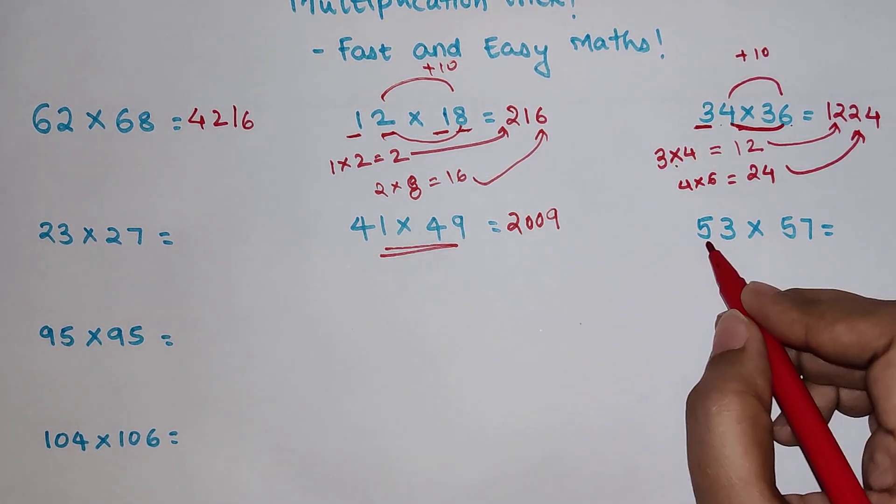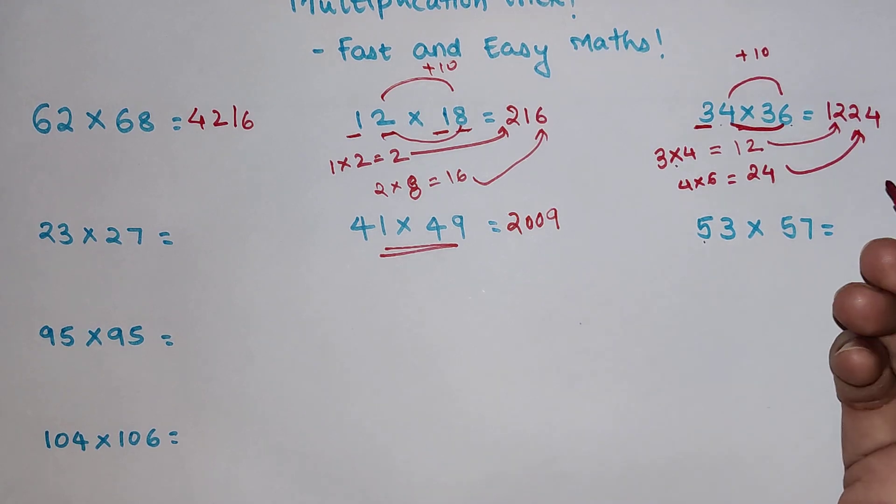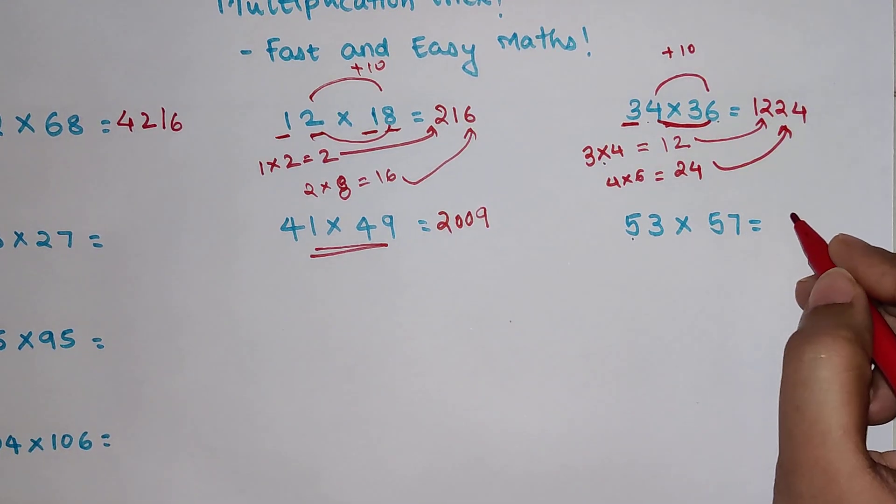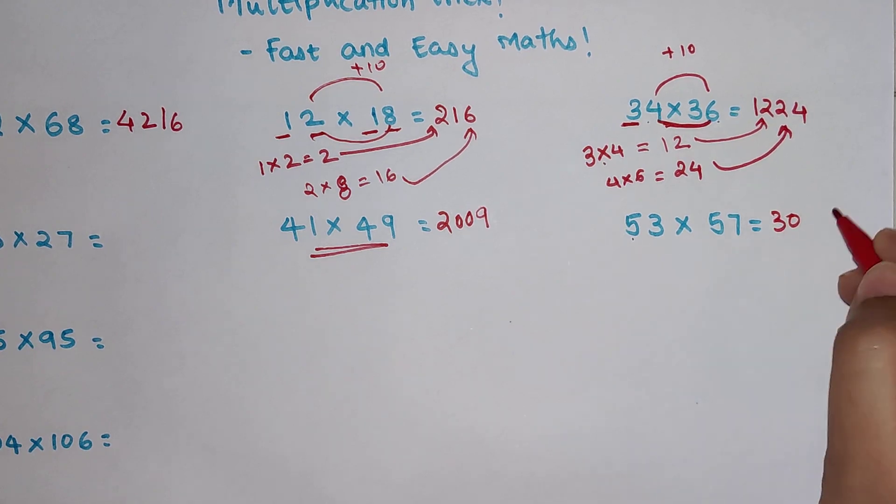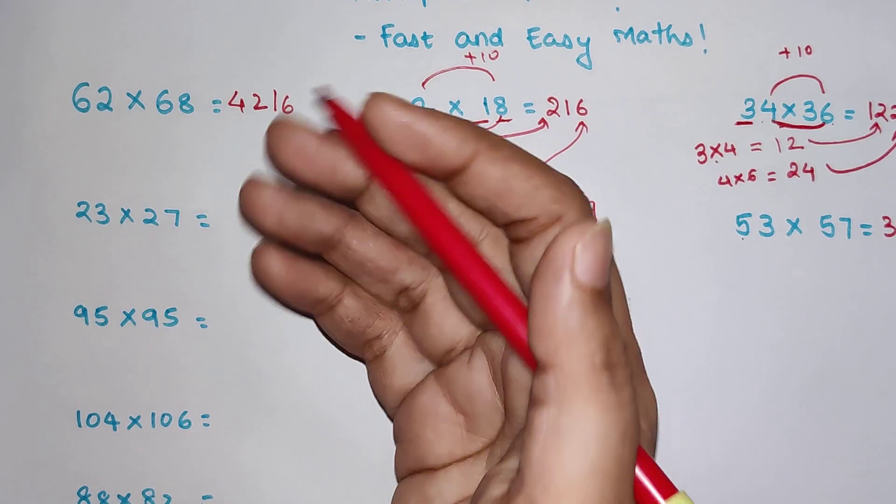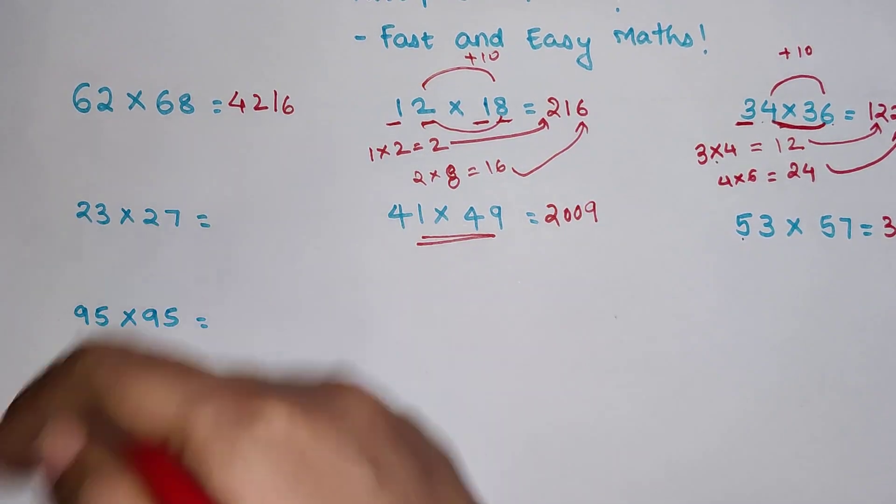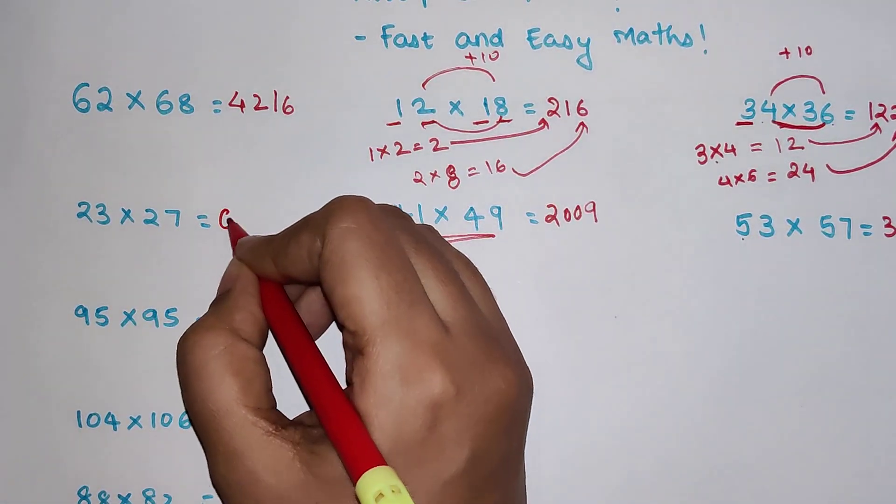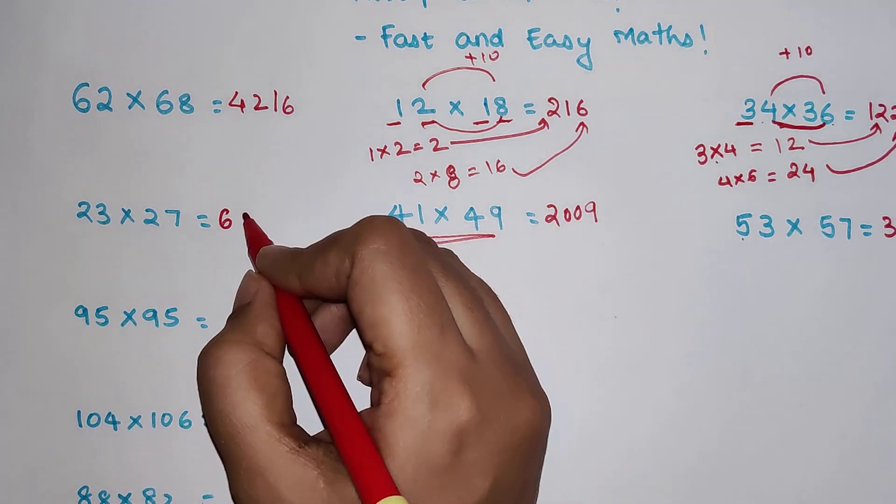So next one over here. 5 into next digit is 6. So 5 into 6 gets you 30. And 3 into 7 gets you 21. Over here we have 2 into next digit is what, 3. So 6 and 3 into 7 gets you 21.